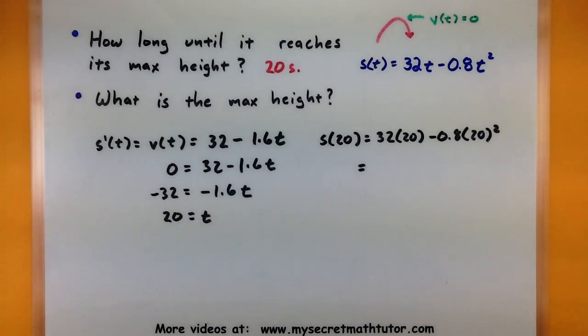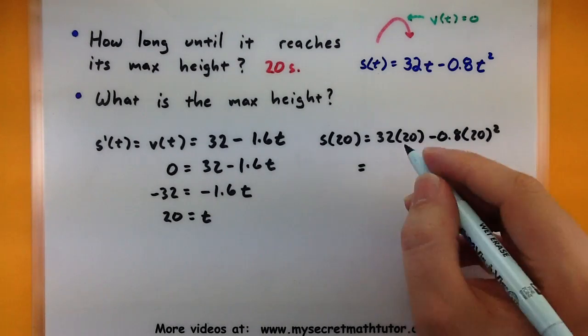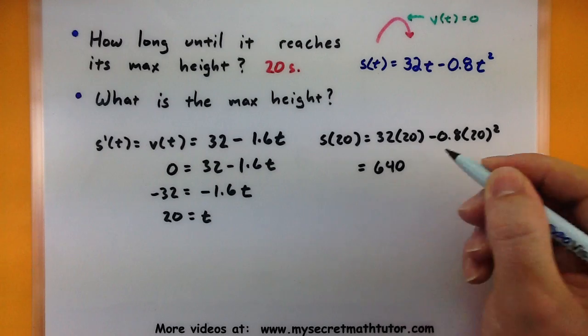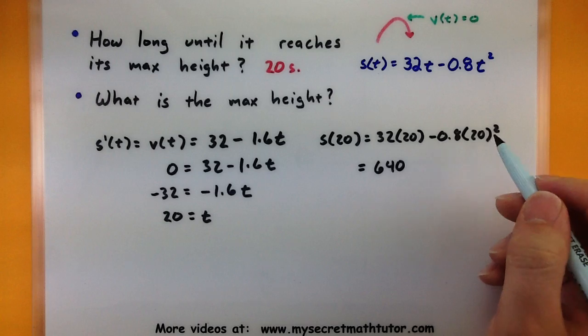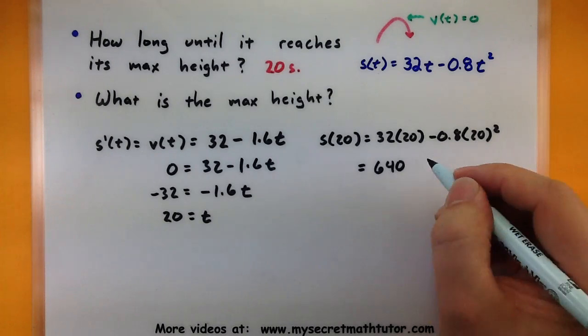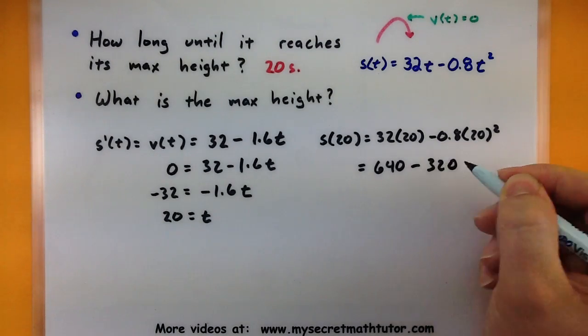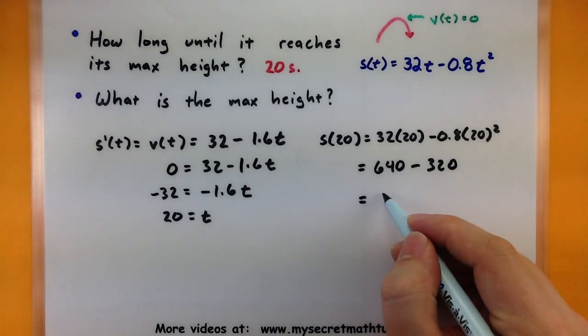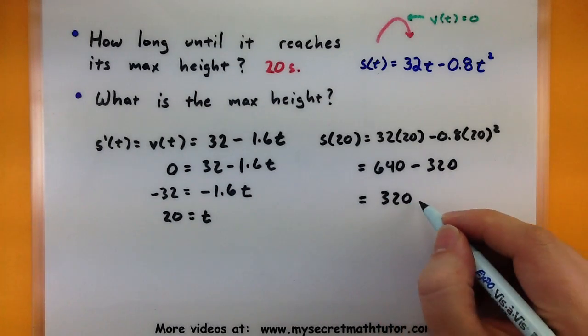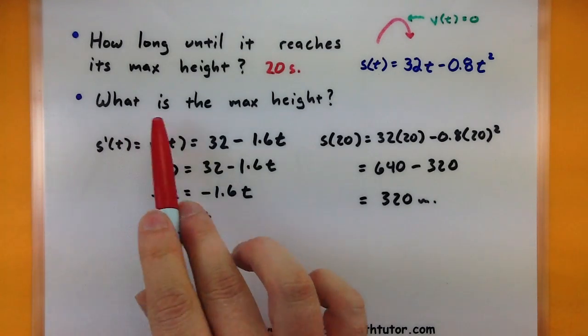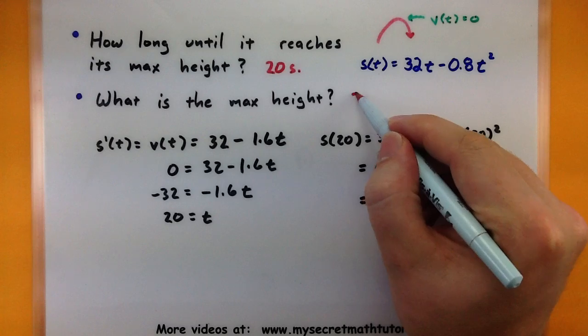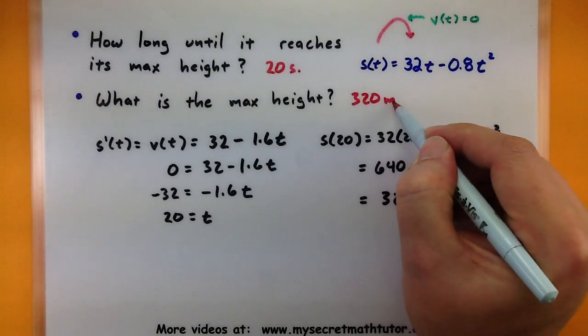A little bit of work to do with this one, not too bad. 32 times 20 would give me 640. Let's see, then I'd have a 20 squared, multiplied by a negative 0.8, that's negative 320, subtract the two, 320 meters. So now I can answer the second part of this. What is its maximum height: 320 meters.